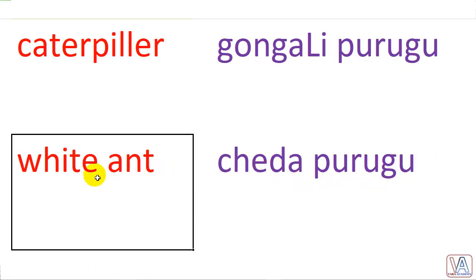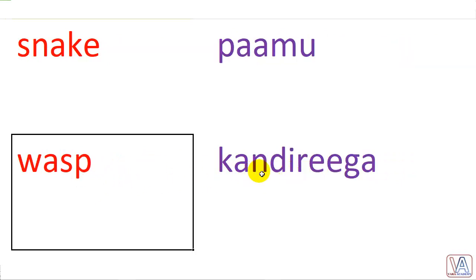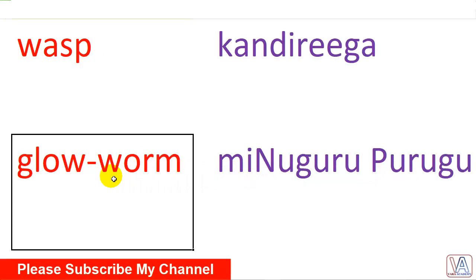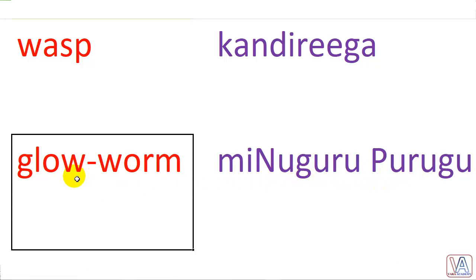Snake — palmu. Wasp — kandhi rega. Glow worm — minuburu purugu.